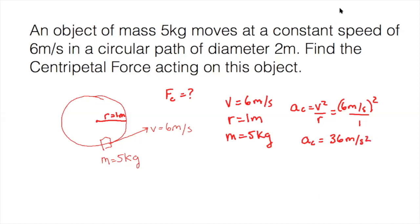Now that's going to help me, because in the second step, what I'm going to do is I know that Fc equals mac. So when I take my M of 5 kilograms and I multiply it by 36 meters per second squared,